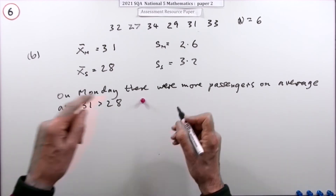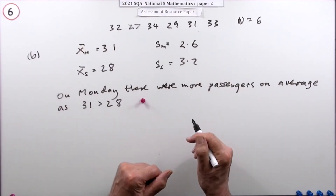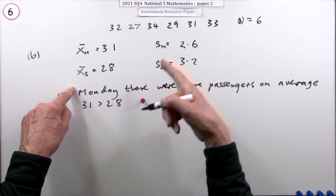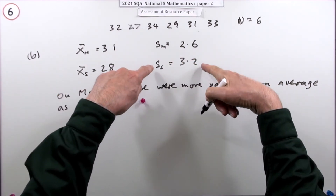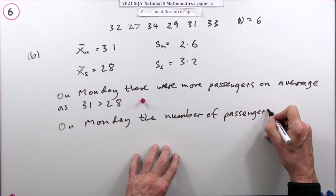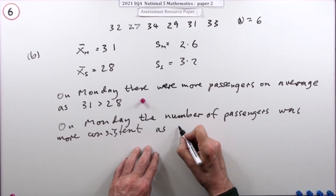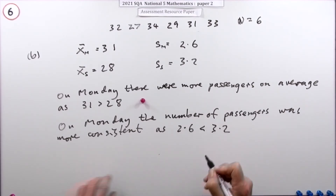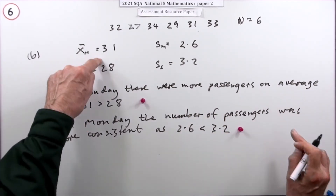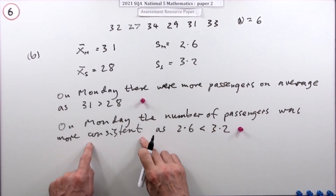For the standard deviation: on Monday the number of passengers was more consistent, as 2.6 is less than 3.2. The key is to use the word 'average' when comparing means, and 'consistent' or 'spread' when comparing standard deviations, and to reference the actual values to show which number tells you which thing.